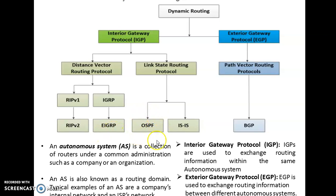Before going into the exact detail of OSPF, we should first understand the term AS, which means Autonomous System, IGP and EGP. The internet as a worldwide network is very difficult to be administered and managed by a single company or organization, so there is a need to divide the whole internet into small autonomous systems. An Autonomous System is a collection of routers under a common administration, such as a company or organization, and is also known as a routing domain.